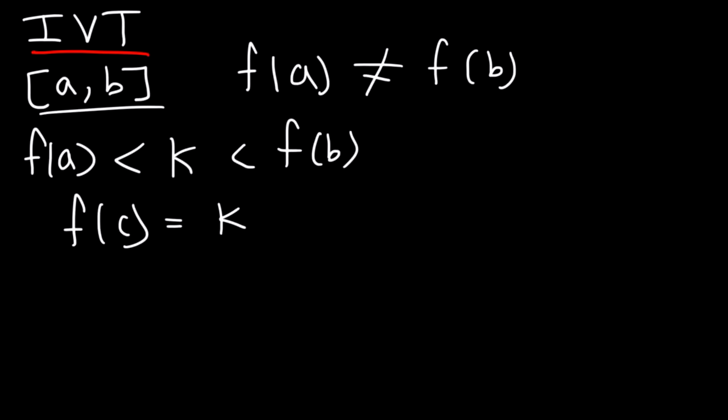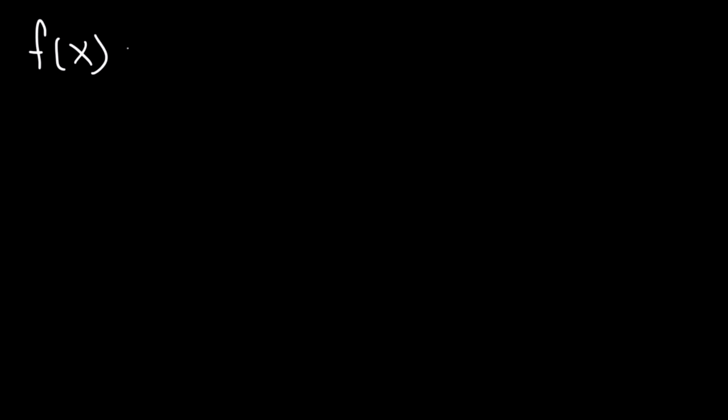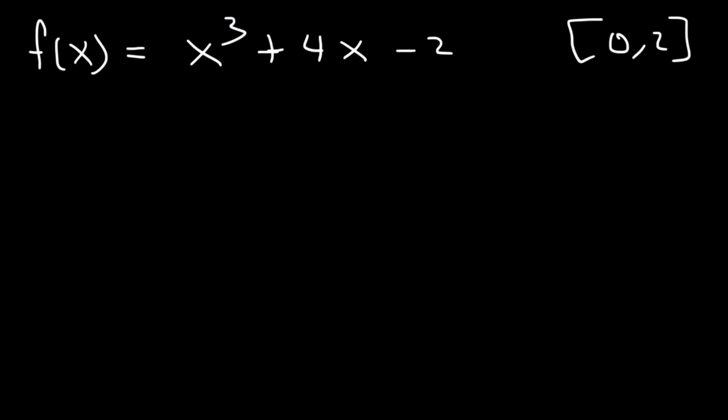Now let's go ahead and apply this information. How can you use the Intermediate Value Theorem to show that there's a root or a zero in this function within the specified interval, where the interval is from zero to two? How can you use the Intermediate Value Theorem to prove that? Go ahead and try.